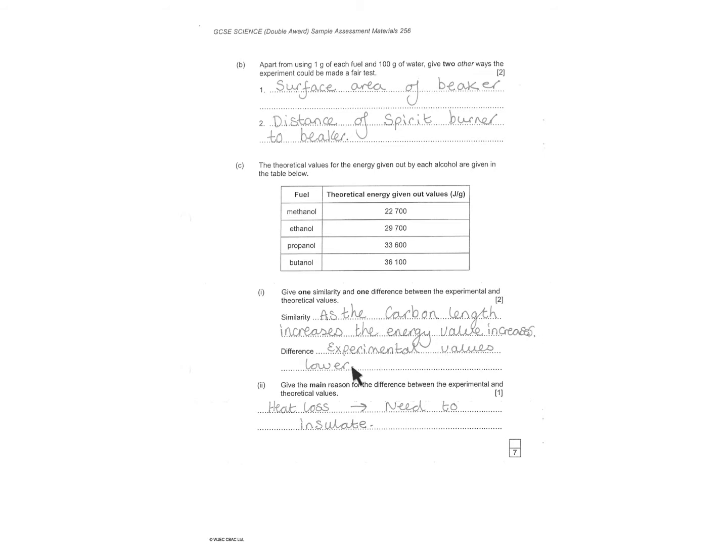Experimental values were lower. Reason for that. Heat loss needed to insulate. We spoke about this before. It was only one mark but you could add silver foil. You could wrap it in cotton wool. You could put a lid on it or a bung on it. Do it in a vacuum. So there's loads of different things you could do there to ensure that heat was not lost.